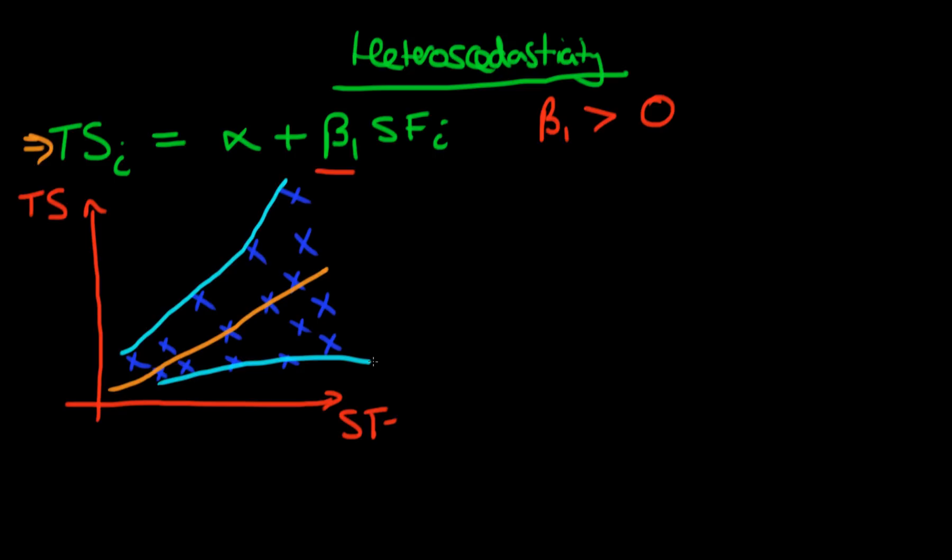But is this indicative of true heteroscedasticity or is this indicative of the fact that we haven't included some important variable? Well, it's actually because we haven't included an important variable. Can you think what that variable might be?